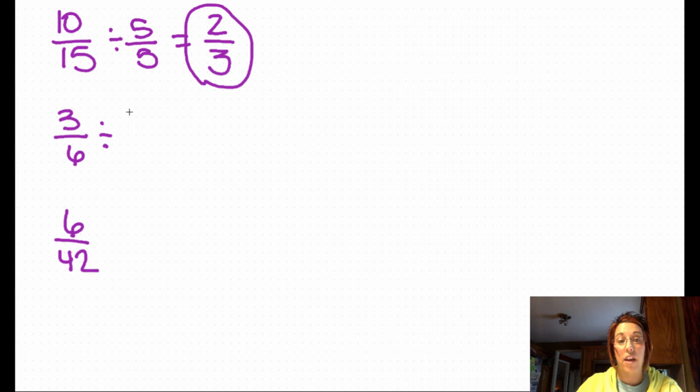I know that 3 is a factor of 6. So I'm going to divide by 3/3. 3 divided by 3 is 1. 6 divided by 3 is 2. The simplest form is 1/2.